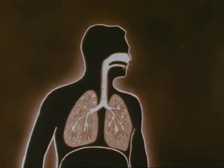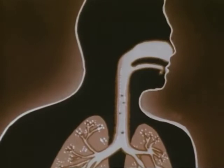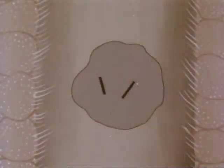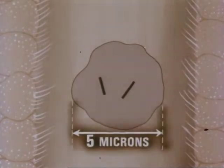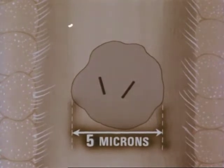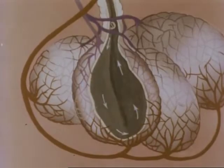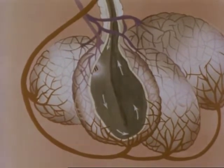Usually the particle must reach the alveoli to take effect. To do so, the particle must pass all the natural traps in the respiratory tract. The size required to accomplish this feat is estimated to be no more than five microns in diameter. Droplet nuclei range from one to five microns in diameter. Using the vehicle of droplet nuclei, virulent tubercle bacilli reach the alveoli, where they are implanted on susceptible tissue and later initiate infection.